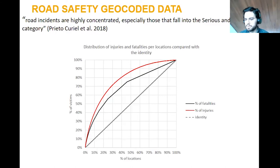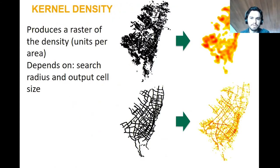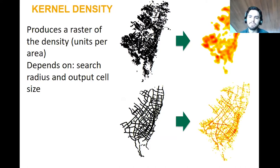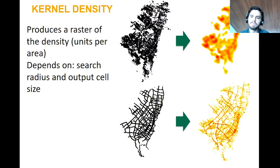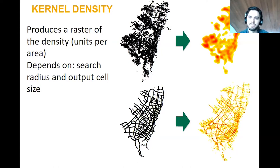There are at least two methodologies that I often use and that are recommended because they give good information about the problem. The first one is kernel density. It basically produces a cloud that represents the density of the amount of victims, crashes, or fatalities. It depends on the search radius — in the map on top I used a big radius representing density at least two kilometers, while in the bottom map I used only about 500 meters, giving more granularity and precision on the amount of victims per intersection. So it depends also on the type of analysis that you will be doing.